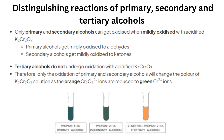As you can see here, examples: propane-1-ol, a primary alcohol, and propane-2-ol, a secondary alcohol, have changed colour, while 2-methylpropan-2-ol, which is a tertiary alcohol, remains orange.